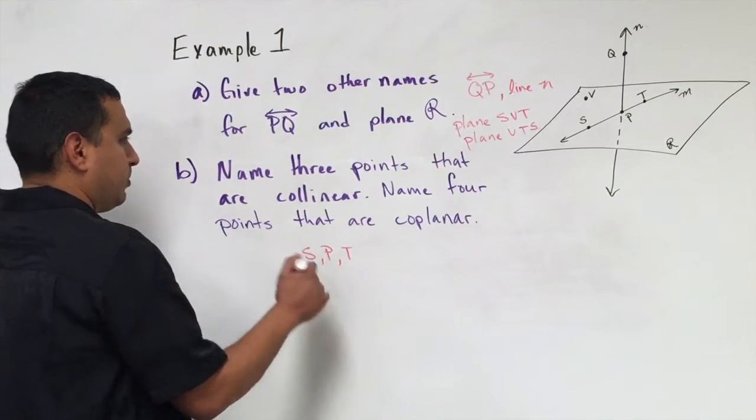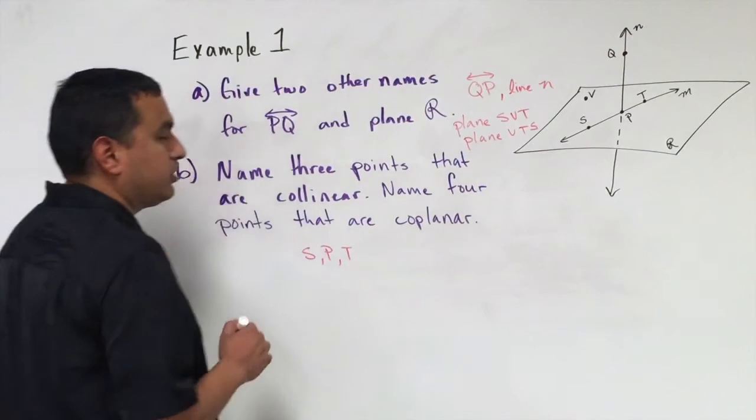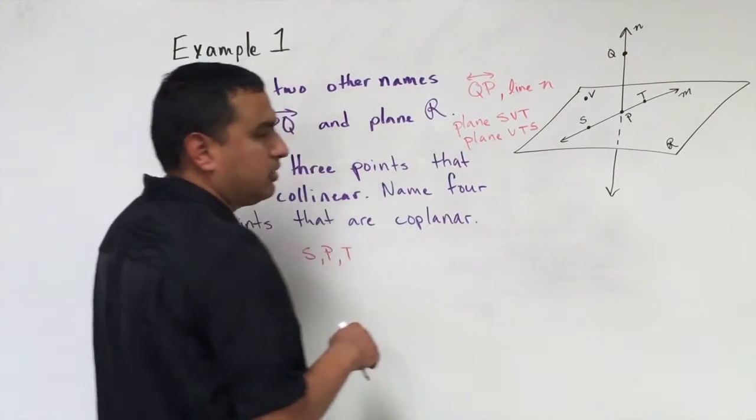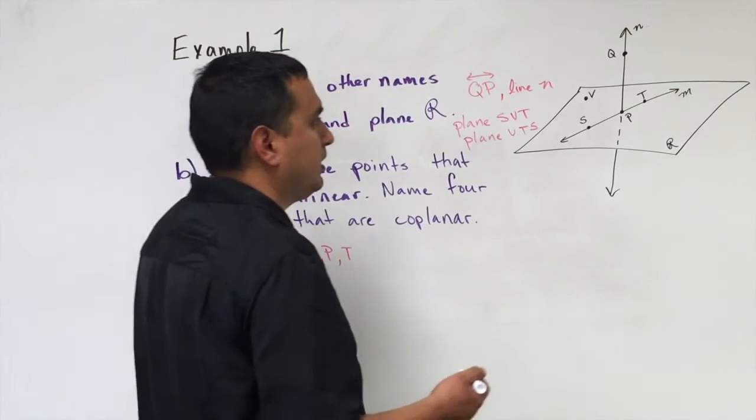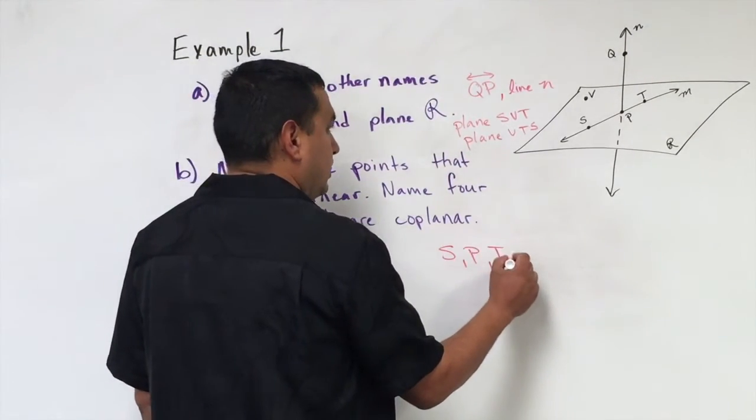And then name four points that are coplanar. So the other question, or the other part of this question, I would need four points that are on the same plane, but not necessarily in the same line. So that would be S, P, T, and V.